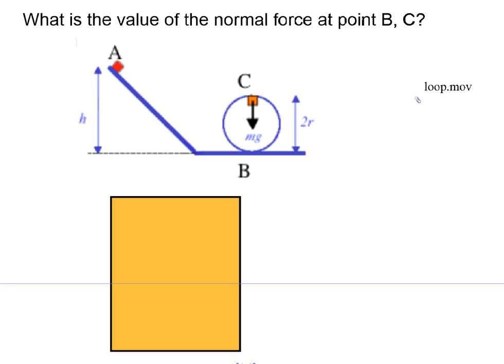Let's do another application of centripetal force, a little different from here. An object is let go from point A, and it goes around the loop-de-loop to point B, and also it comes down and lands here on point C. The question we would like to answer: what is the normal force at points B and C?